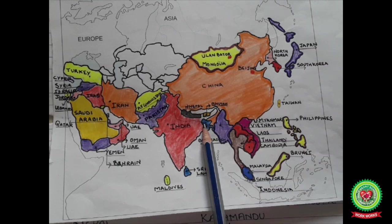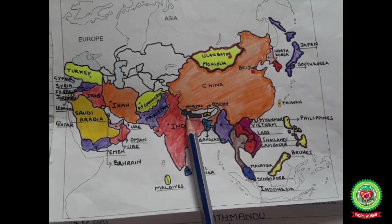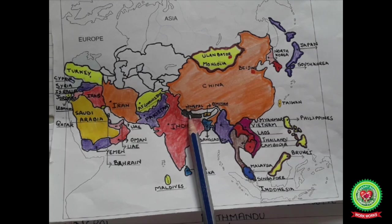Bangladesh, to the east of India on the Bay of Bengal, is a South Asian country marked by lush greenery and many waterways. The largest delta of the world, the Ganga-Brahmaputra delta, is found here, formed by the Ganga and the Brahmaputra rivers in India and Bangladesh. Capital is Dhaka. Nepal — officially the Federal Democratic Republic of Nepal — is a country in South Asia, capital Kathmandu. Nepal has many highest peaks; out of that, Mount Everest is the highest mountain peak of the world with a height of 8,848 meters.